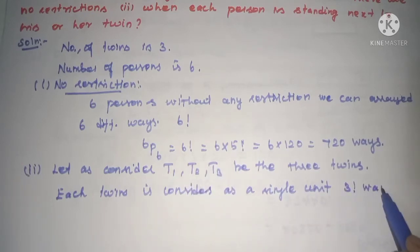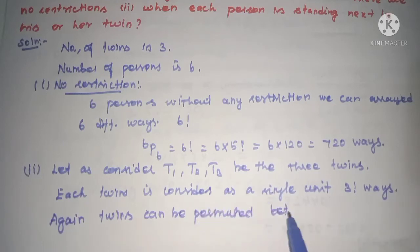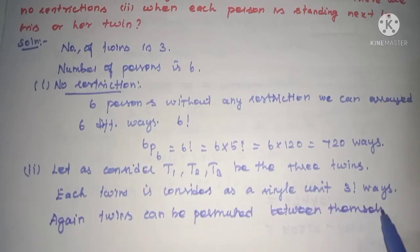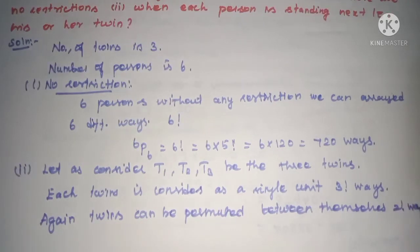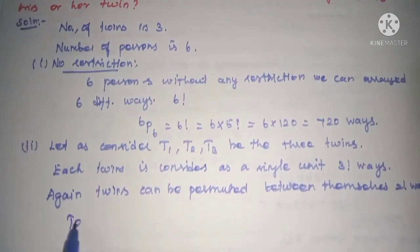This gives us 3 factorial ways. Again, the twins can be permuted between themselves, so it is 2 factorial ways. So this is the total number of arrangements.